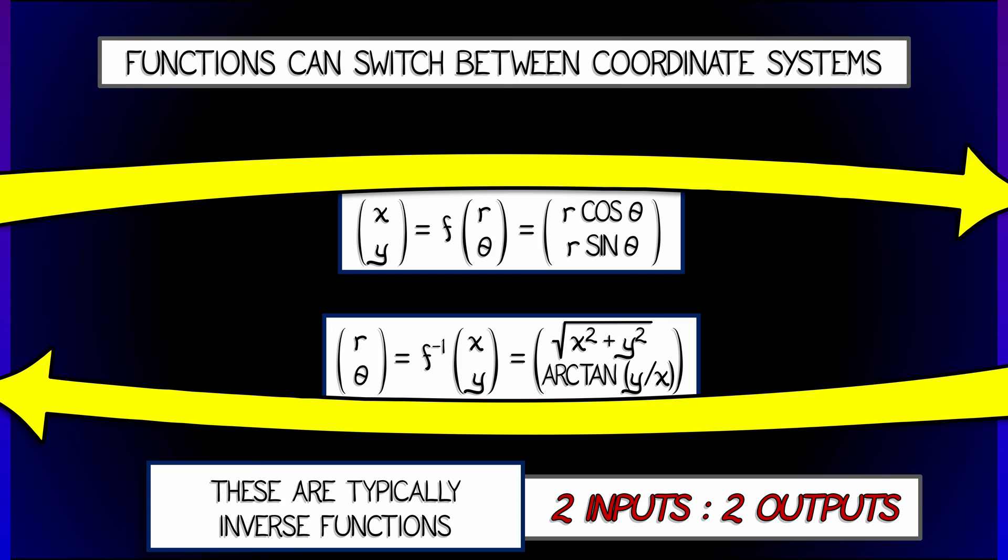If you're going from polar to Euclidean, you can look at the function x equals r cosine theta, y equals r sine theta. That has two inputs, two outputs.